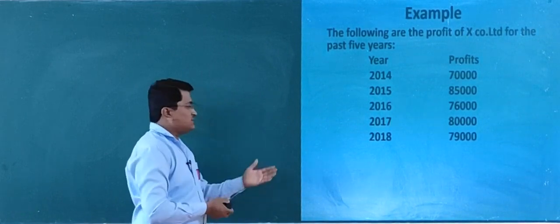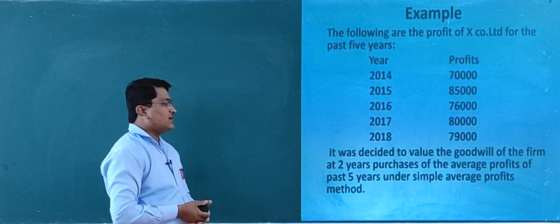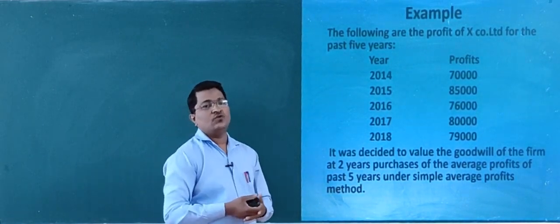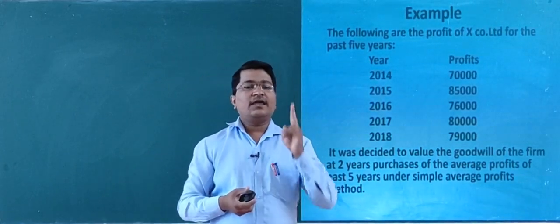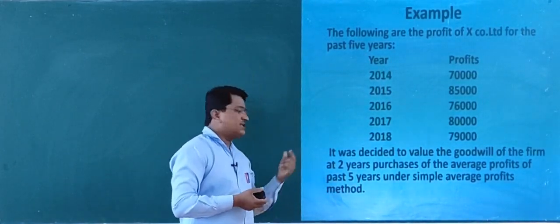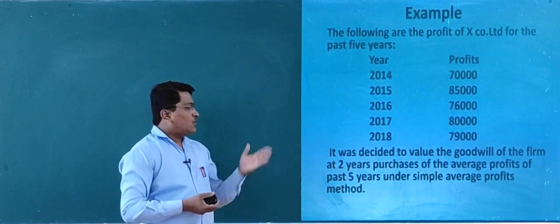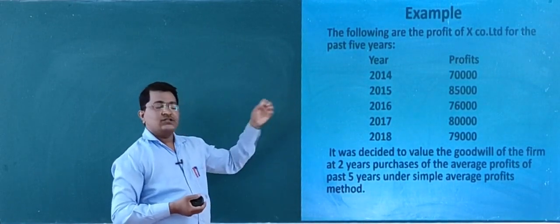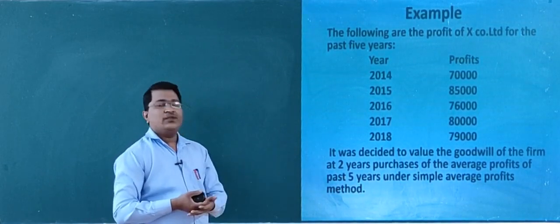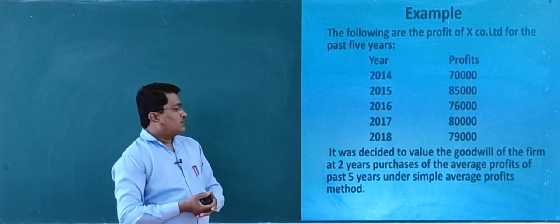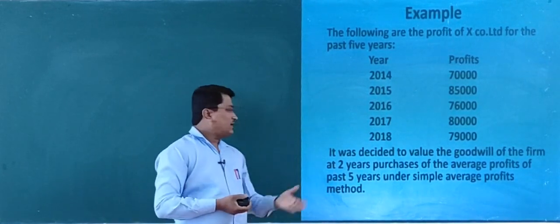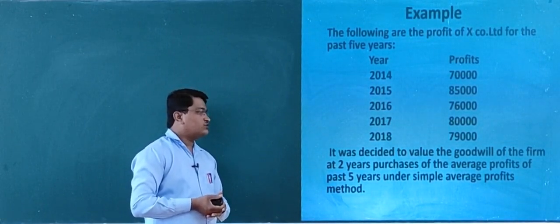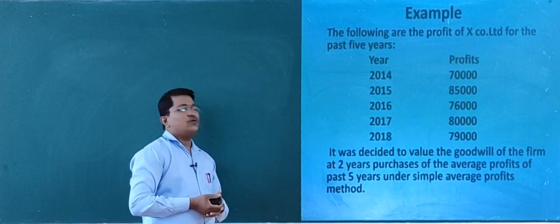They have also given some instructions. It was decided to value the goodwill of the firm at 2 years purchases — please make note of that: 2 years purchases — of the average profit of past 5 years.